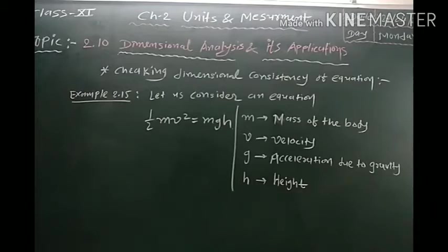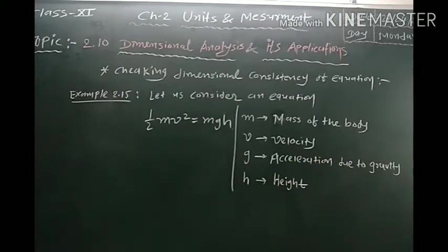Let us consider the equation: ½mv² = mgh. Here M is the mass of the body, V is the velocity, G is the acceleration due to gravity, and H is the height. We need to find out whether this equation is dimensionally correct or not.